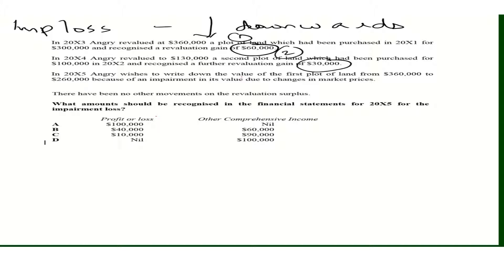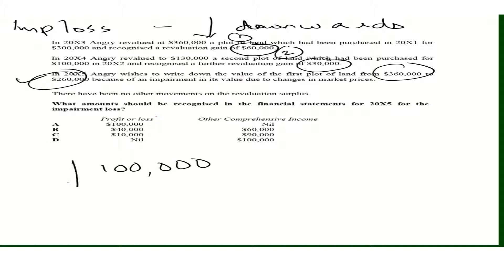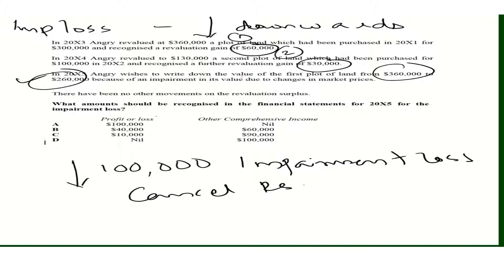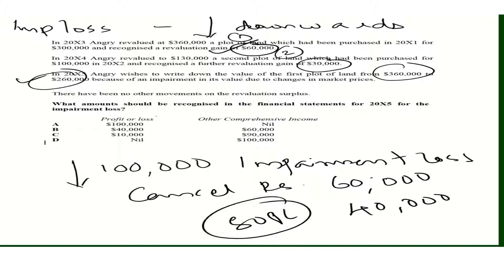In 20X5, Angry wishes to write down the value of the first plot of land from 360,000 to 260,000 due to impairment. There is a downward revaluation, but before the impairment loss goes to SOPL, you must first cancel the revaluation surplus associated with Plot 1. Plot 1 has a revaluation surplus of 60,000, so the remaining balance of 40,000 goes to SOPL as an impairment loss.